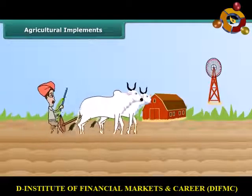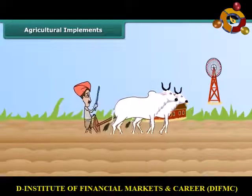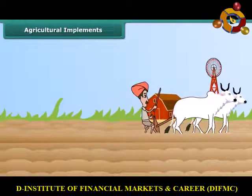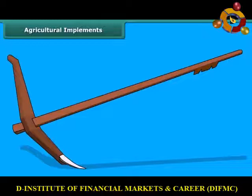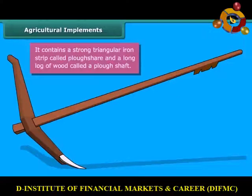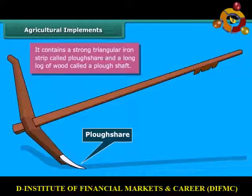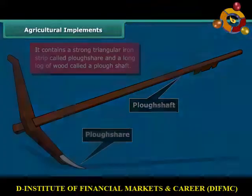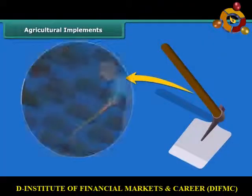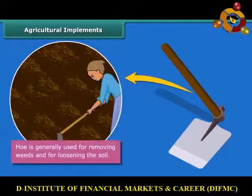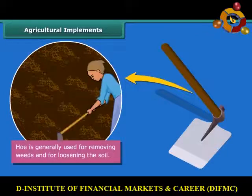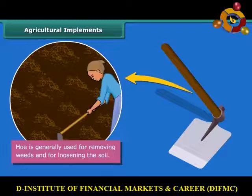Now look at this farmer — he is plowing the field with a plow made up of wood. It contains a strong triangular iron strip called the plow share, and the main part of the plow is a long log of wood called the plow shaft. Another tool used in plowing is a hoe. It is used for removing weeds and for loosening the soil. It is a long rod of wood with a strong, broad and bent plate of iron that works like a blade.